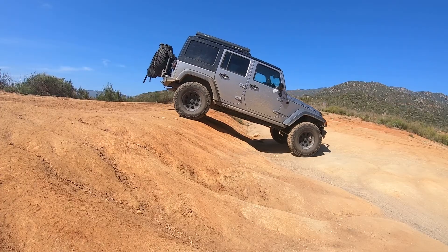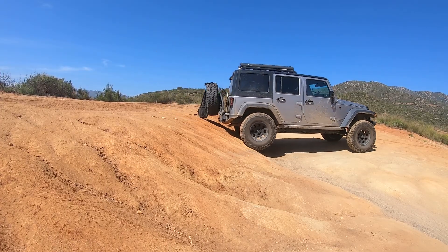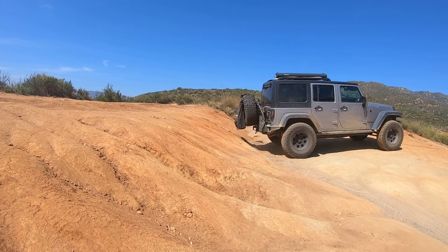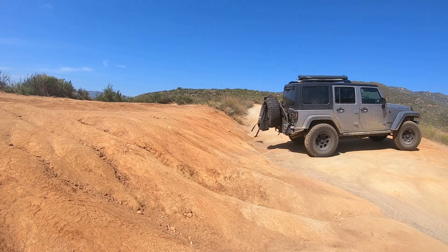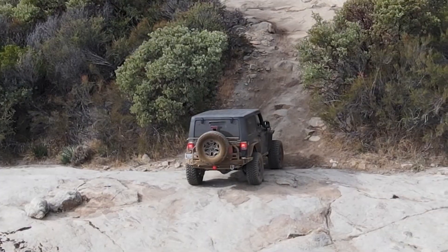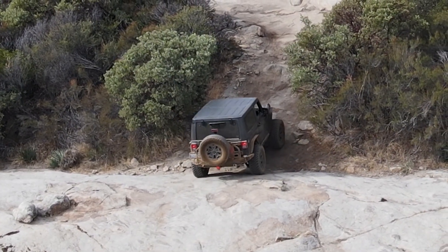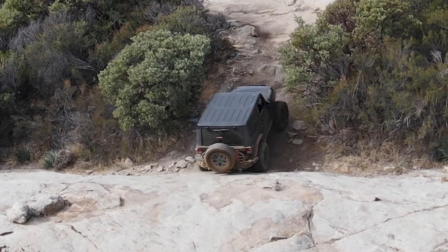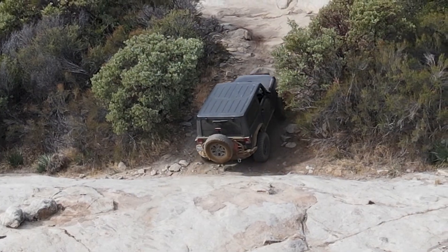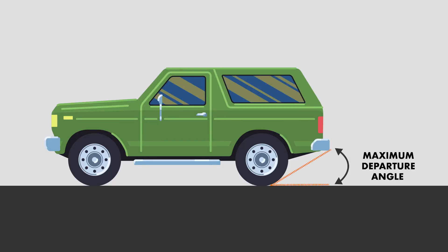Or, if you are descending, it defines how steep of an obstacle you can drive down without your bumper hitting the obstacle as your tires come onto level ground. The departure angle is defined as the angle between the ground level and a line drawn from the rear of the back tire to the lowest point on the car's rear.